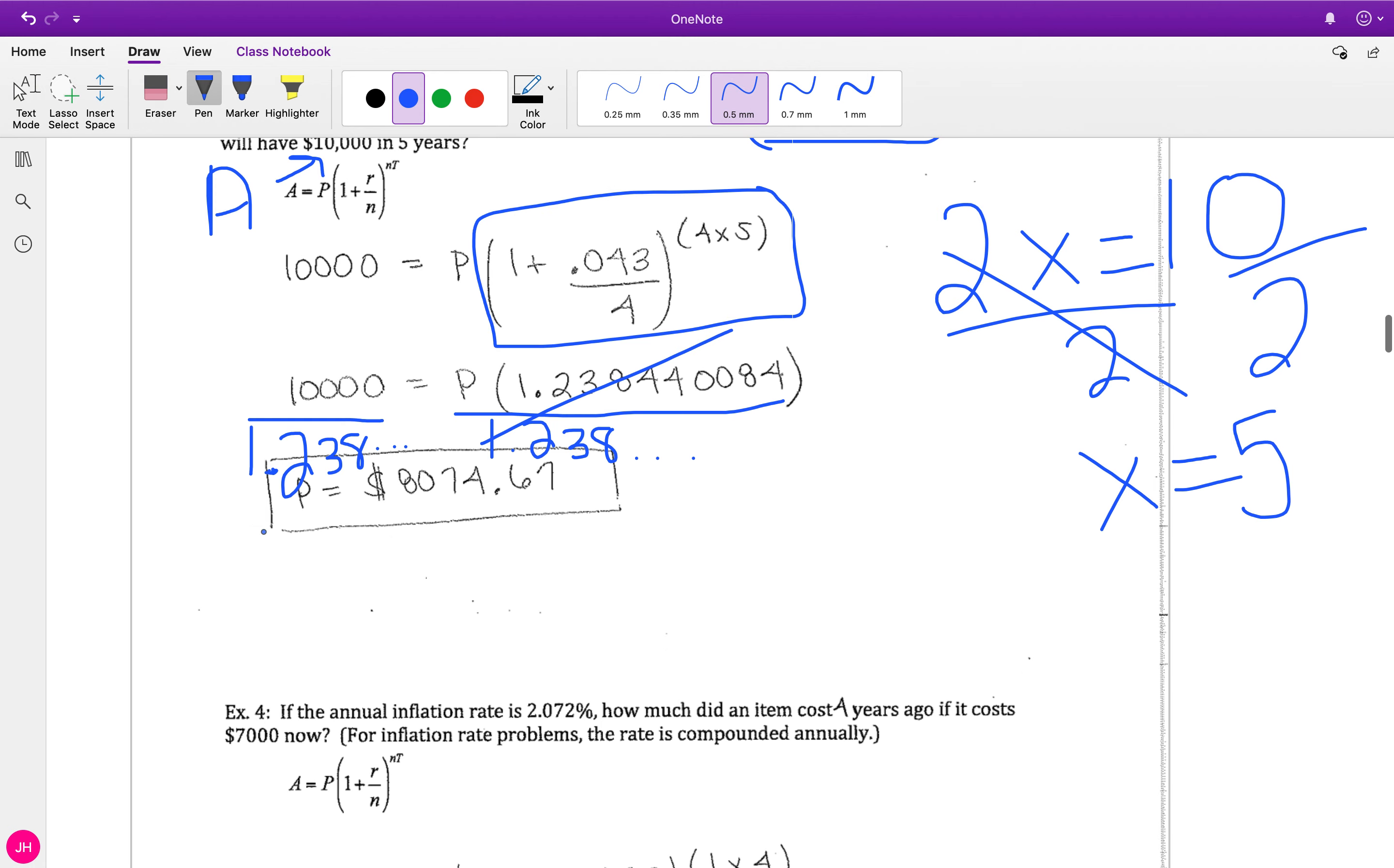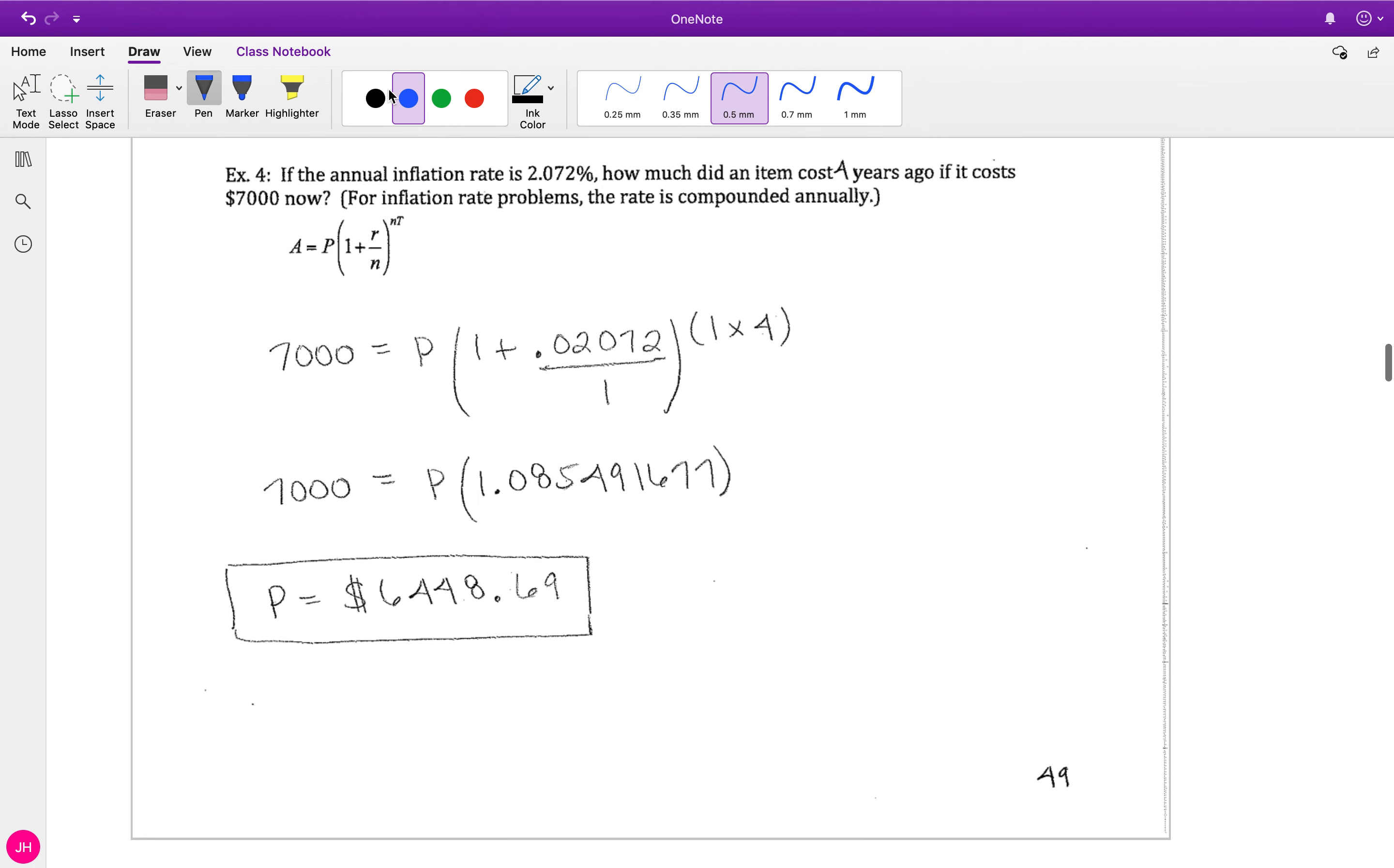This one, we're looking again for our P. The inflation rate gives me R. How much did an item cost four years ago? So anytime we're doing what I call time travel - going back in time or springing forward - if we're doing any sort of time traveling, that's when we're gonna have this weird method where we solve for P but plug it in for A.